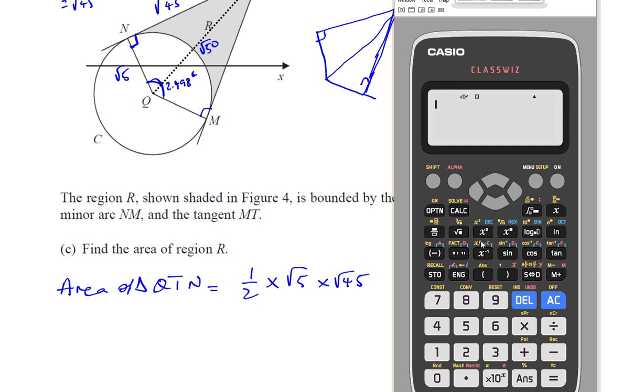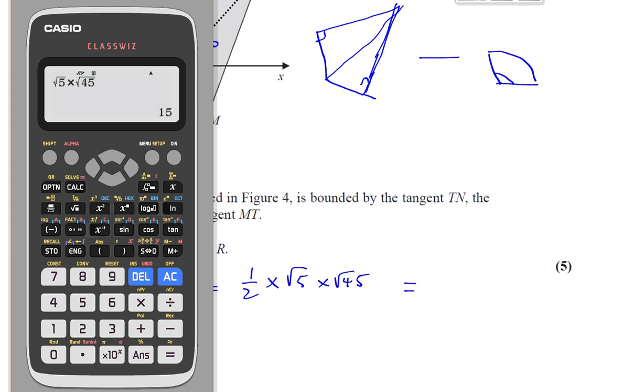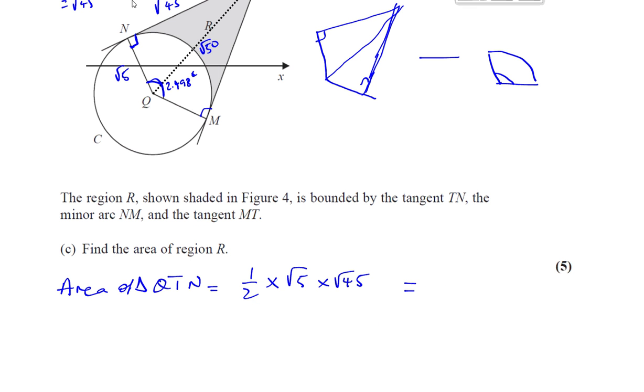Let's say root 5 times root 45, and that gives us 15, it gives us the exact value actually. So that gives us 15 over 2, it's 15 over 2 because you've got the half there.